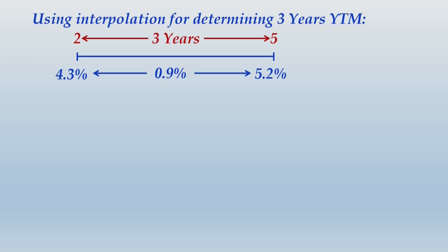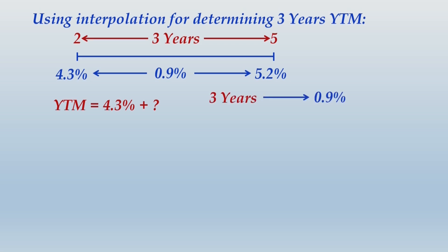Our target period is 3 years, so the bond with 3-year maturity and similar credit rating will lie between the 2 and 5-year bonds, meaning its YTM will be greater than 4.3% but less than 5.2%. We apply interpolation: for a 3-year gap, the difference in YTM is 0.9%. But we want the YTM of a 3-year maturity, so between 2 and 3 years, the gap is just 1 year.